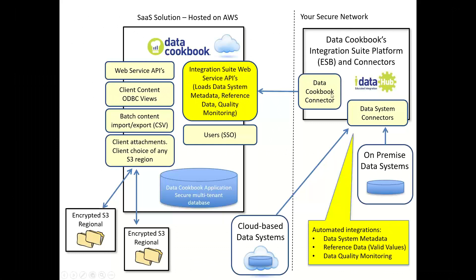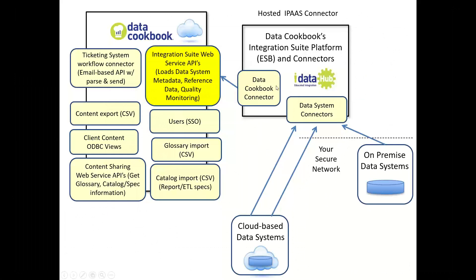The iData Hub talks to the Cookbook to understand what the data systems are and what your quality rules are. A limited number of administrators go in and configure the actual service account connectivity. It uses a JDBC connection to connect your databases and pull in information. We do offer an iPaaS version outside your firewall, but virtually no one takes us up on it — most people want this happening inside their network. It's a simple install that takes less than a day.